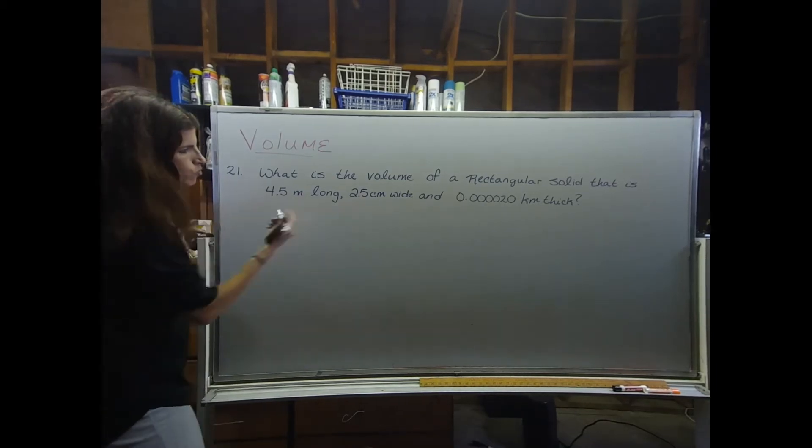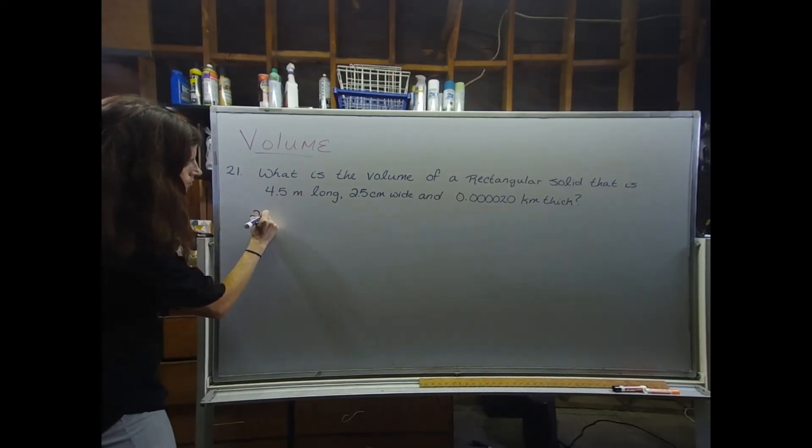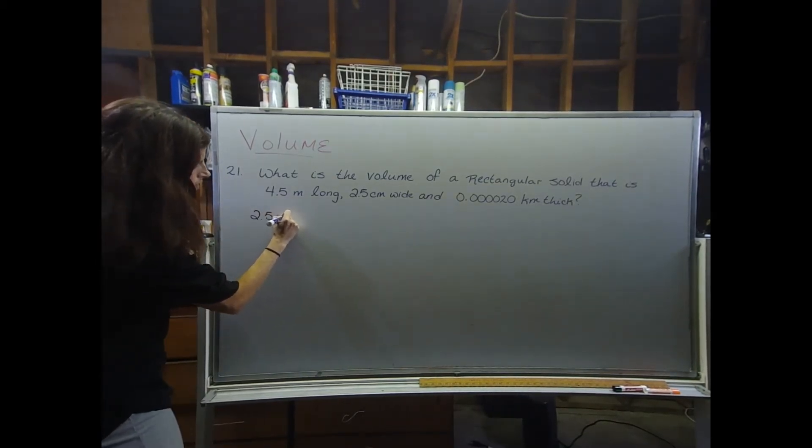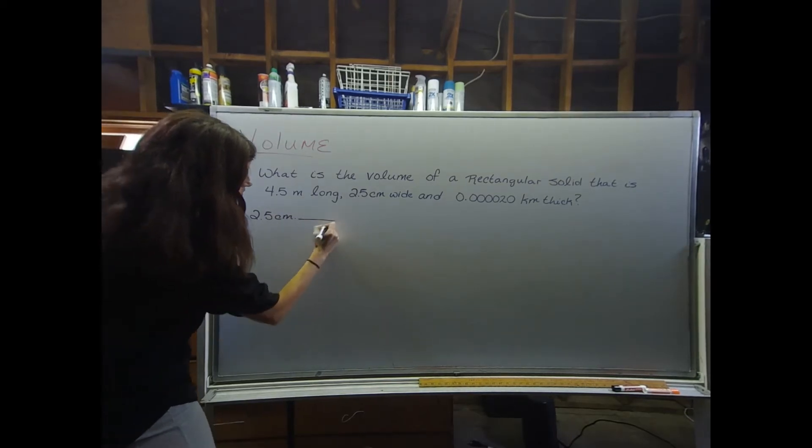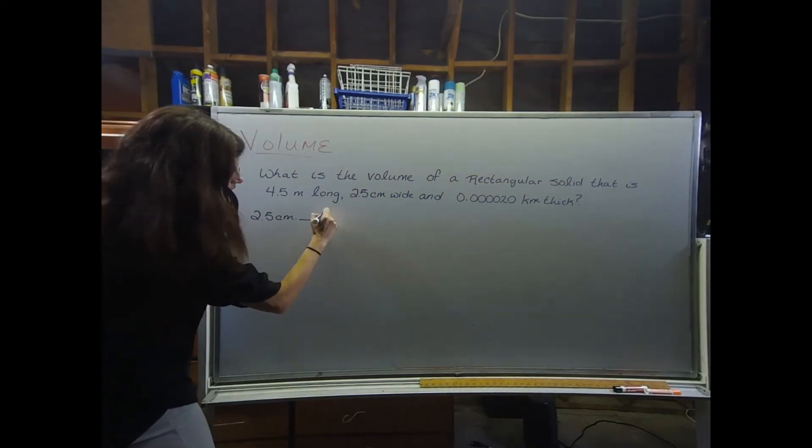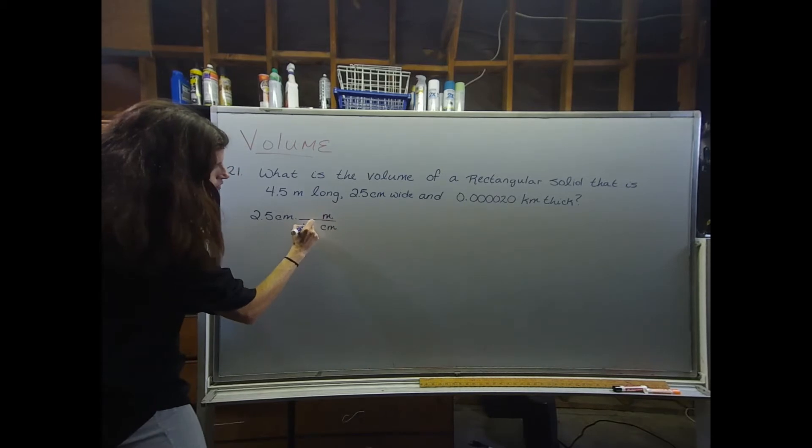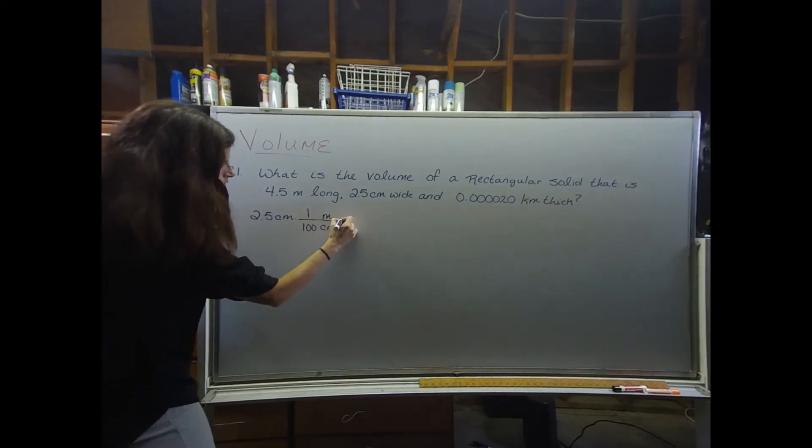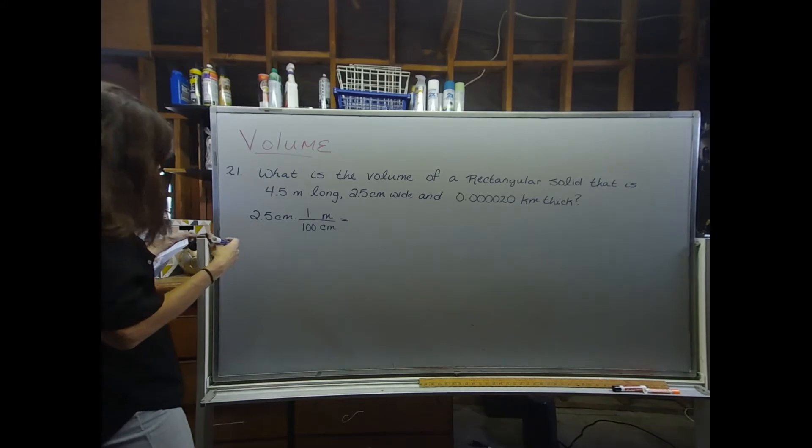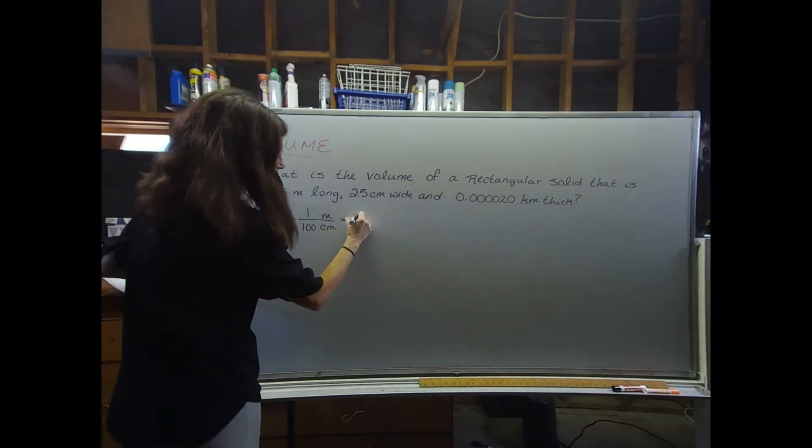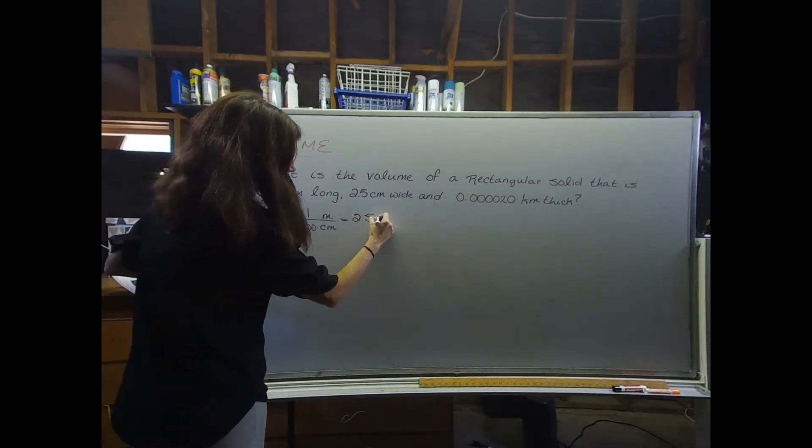So I'm going to take 2.5 centimeters. I need to get rid of centimeters and convert to meters, so I'm going to do 100 centimeters in one meter, and that gives me 2.5 times 10 to the negative 2 meters.